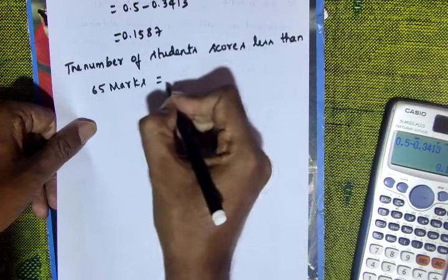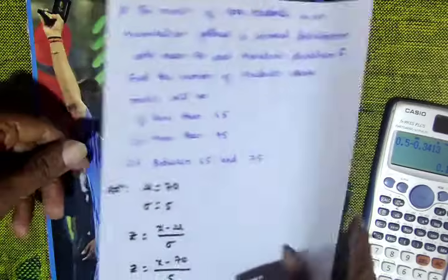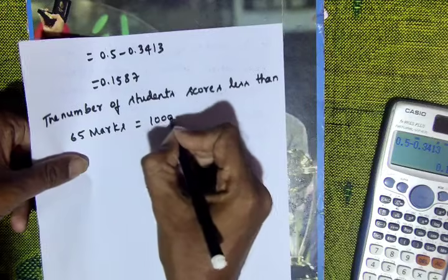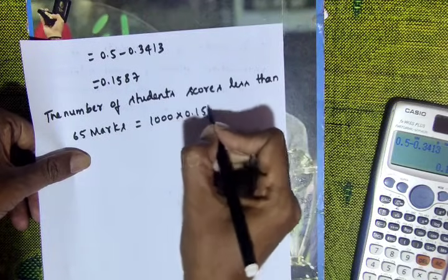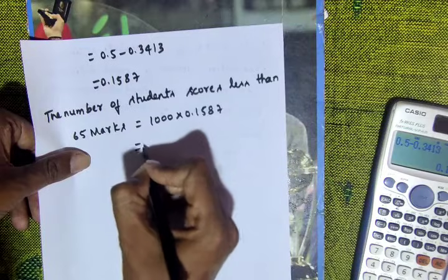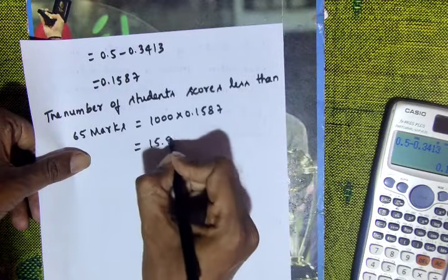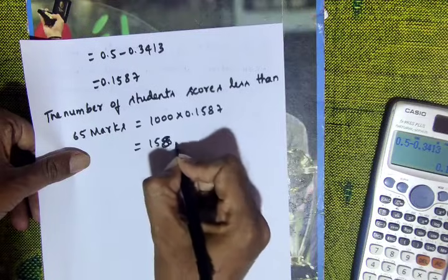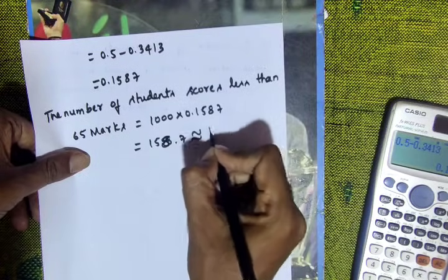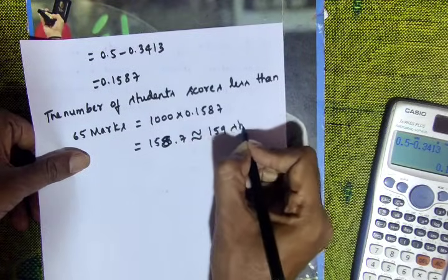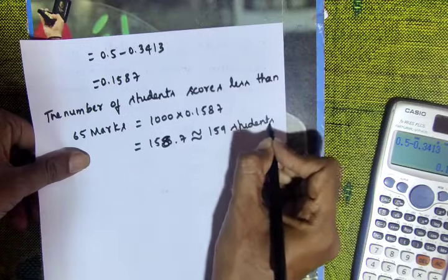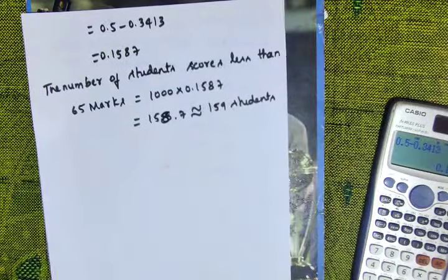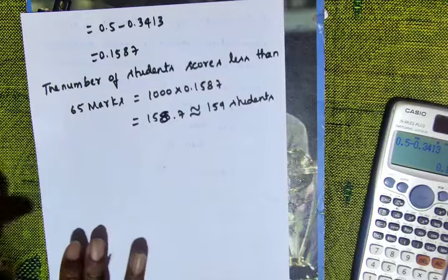The number of students who scored less than 65 marks equals 1000 times 0.1587 equals 158.7, approximately 159 students out of 1000.